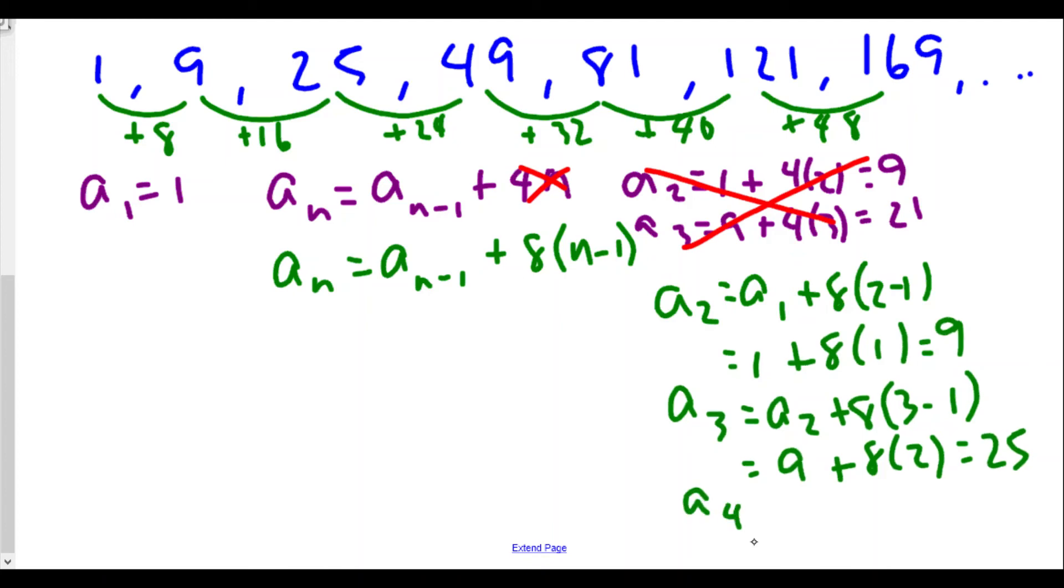16 plus 9 is 20, oh that looks like it's working out pretty nicely. And of course a4 is equal to a3 plus 8 times 4 minus 1 and that's equal to 25 plus 8 times 3. 25 plus 24 is 49. This looks like the formula so it looks like we're going to have as our answer.